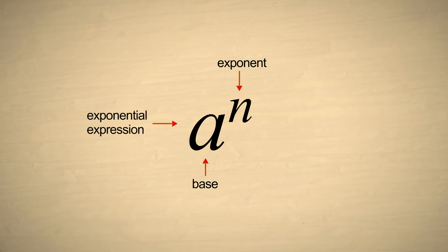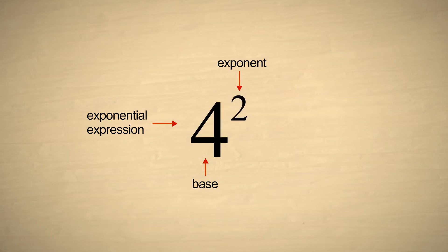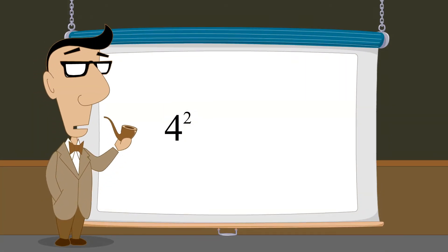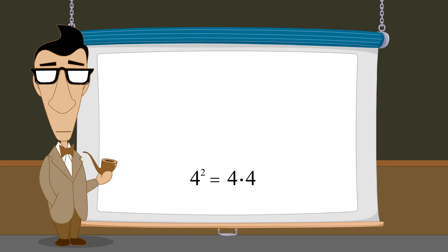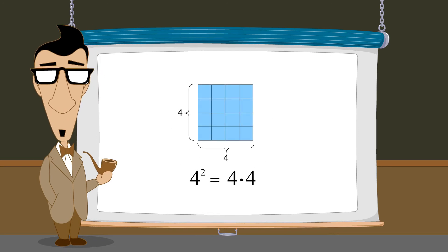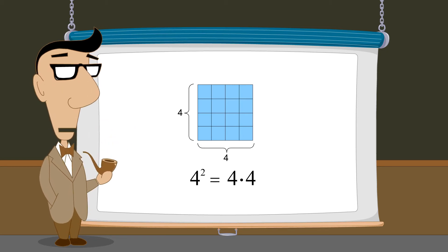For example, the exponential expression four raised to the second power is written as the number four with an exponent two written as a superscript. Since raising a number to the second power is equivalent to multiplying two copies of that number together — which is the same operation one would perform when calculating the area of a square — the number is said to be squared.